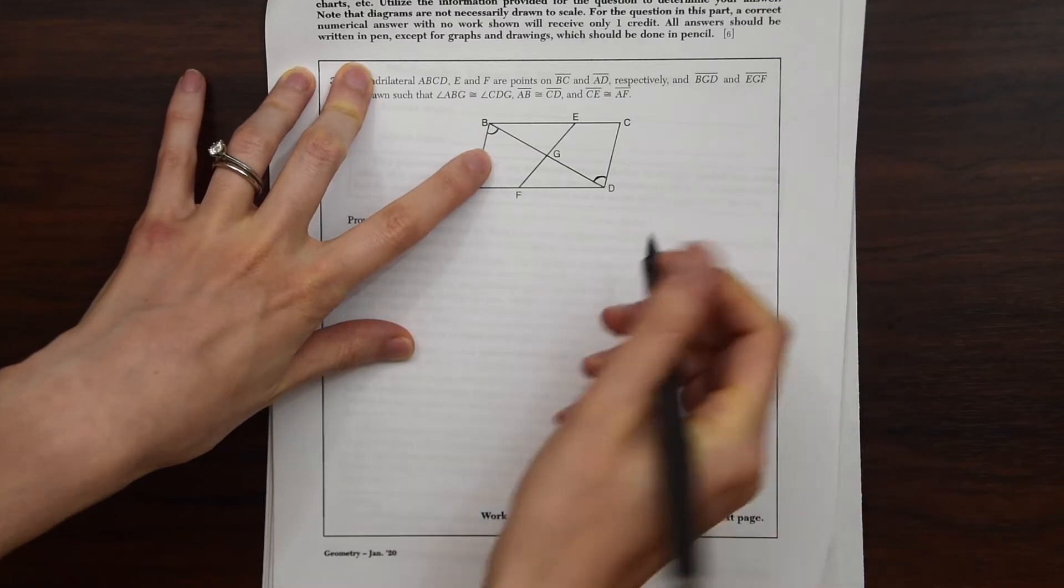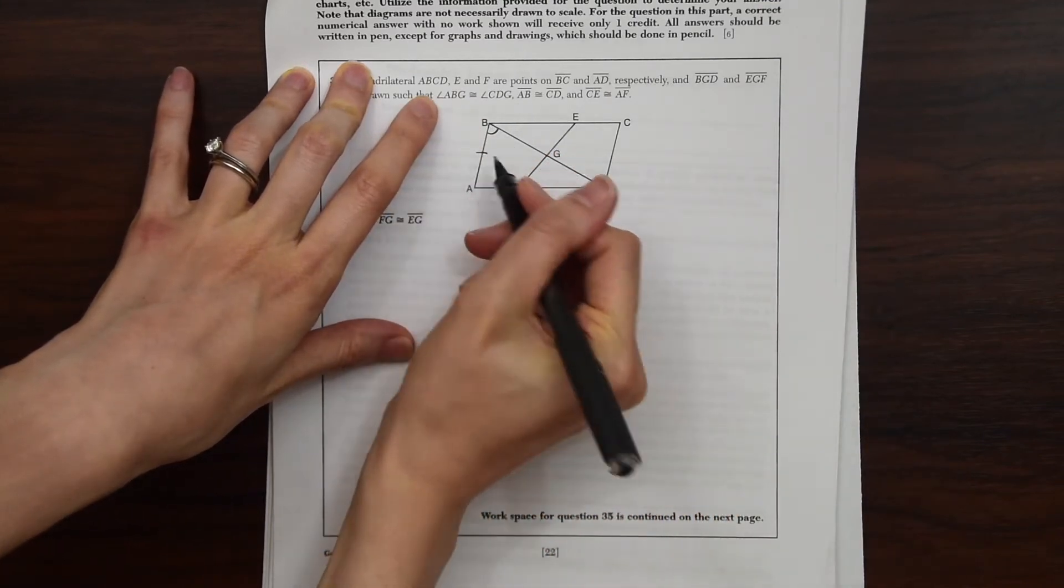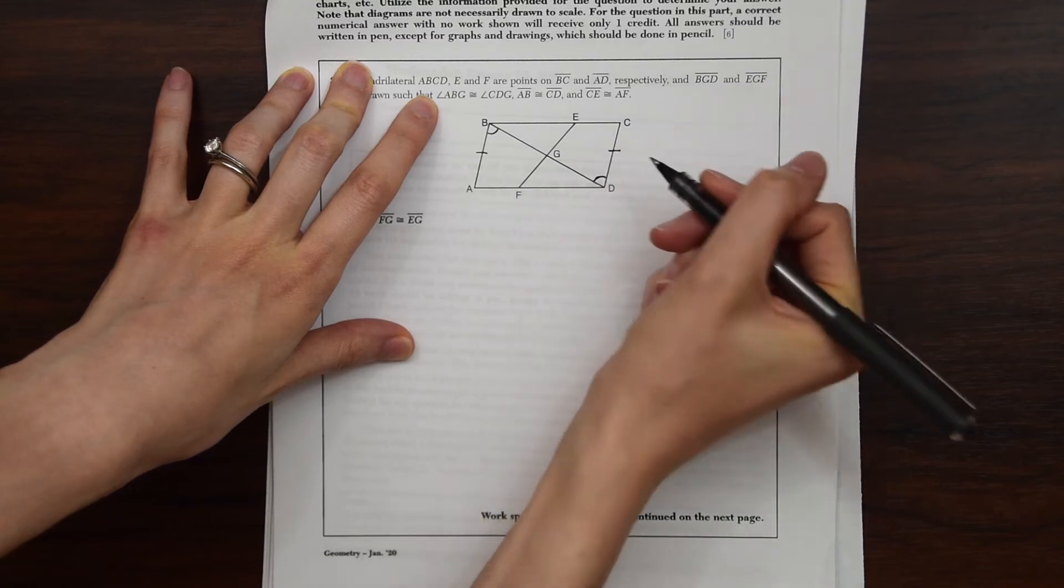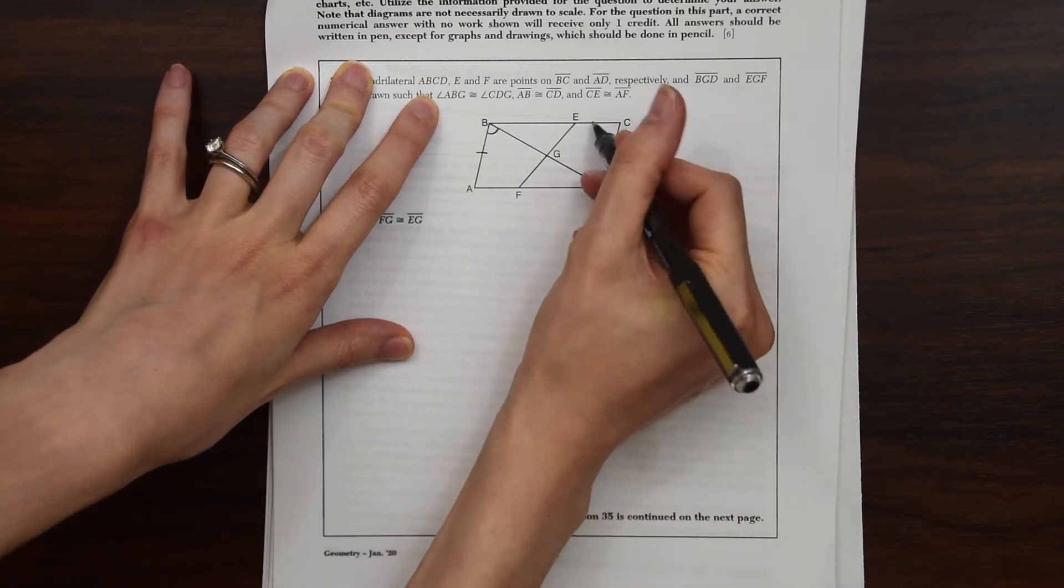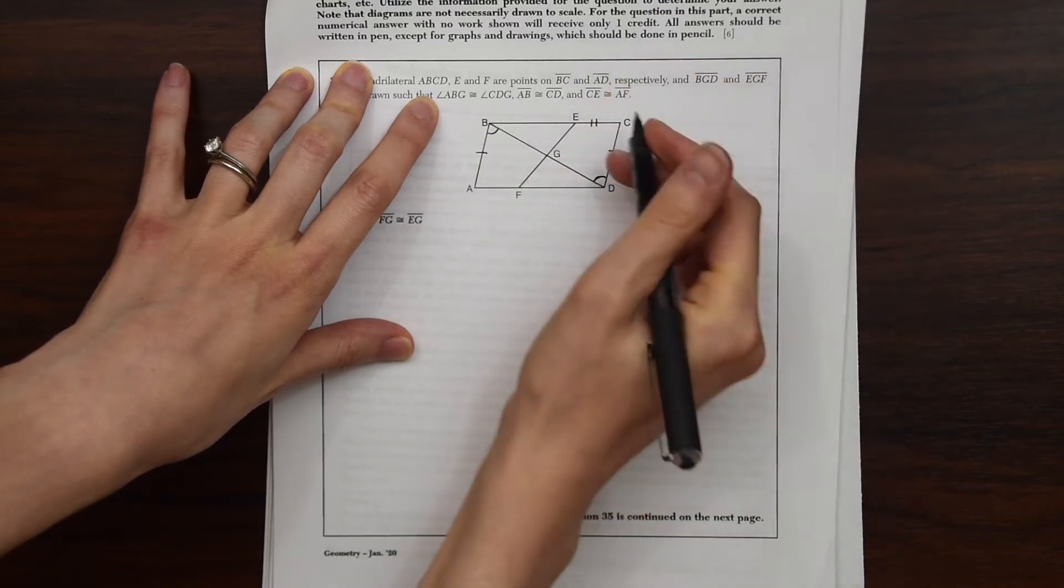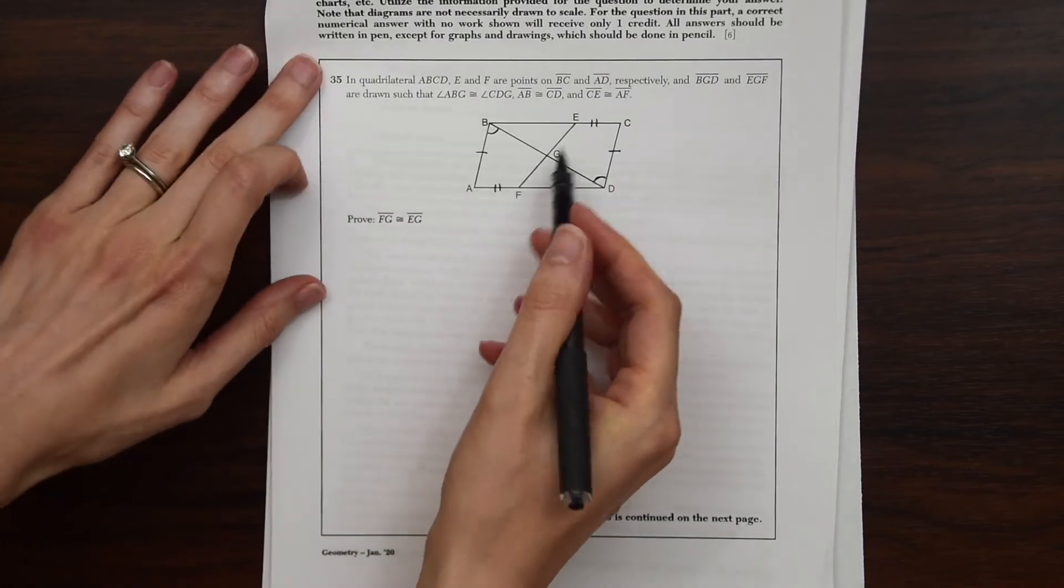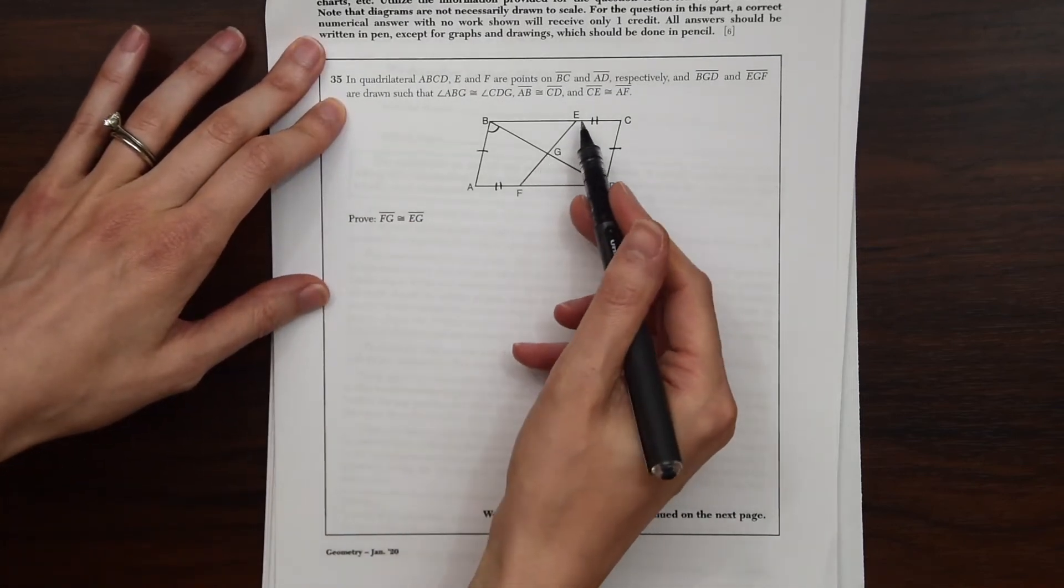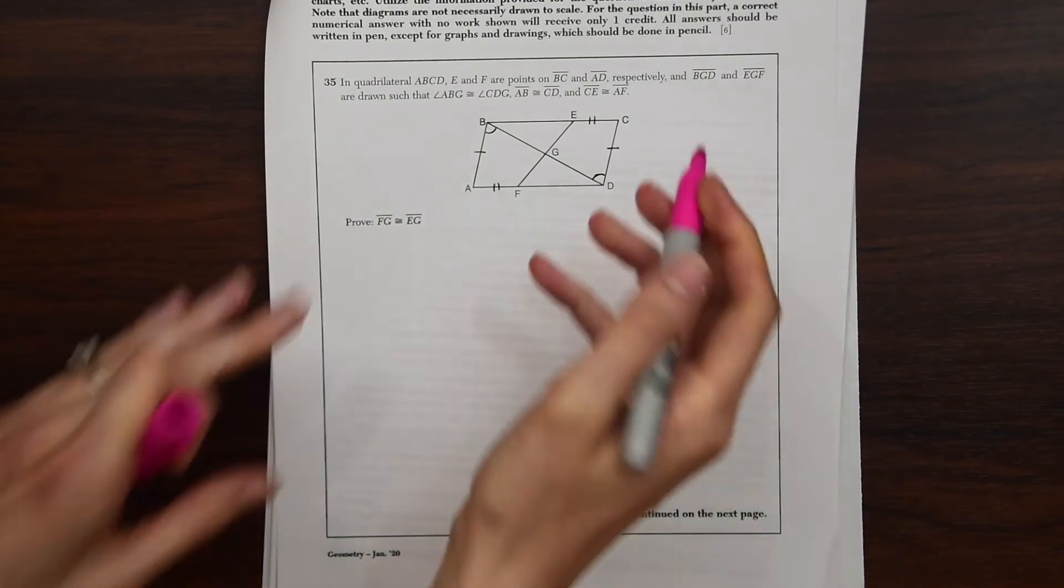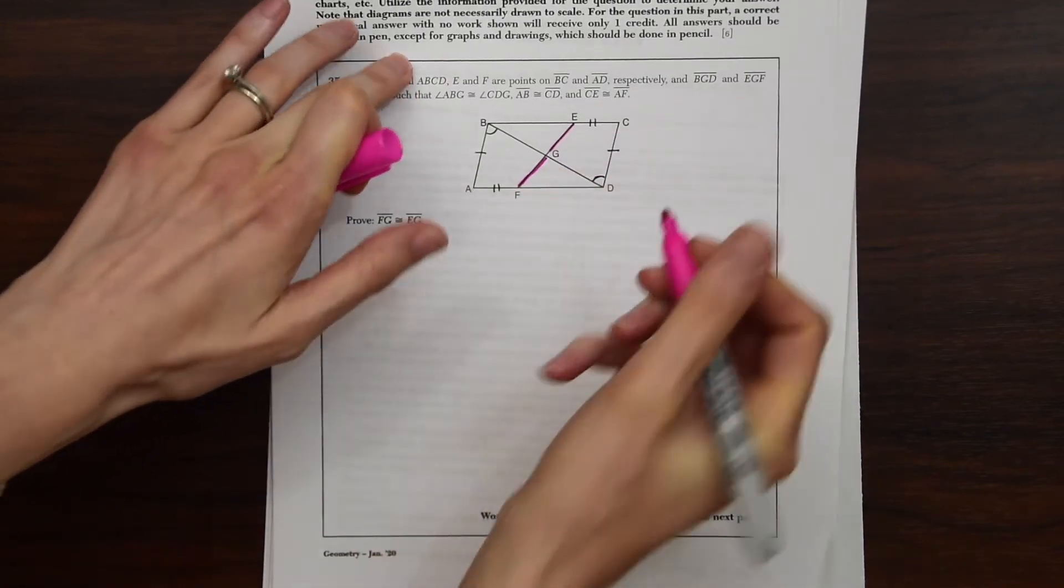And BGD and EGF are drawn such that angle ABG is congruent to angle CDG. So these two angles are congruent. And AB is congruent to CD. And CE is congruent to AF. Prove FG is congruent to EG. So I'm just going to highlight what we want to prove congruent. We want to prove FG is congruent to EG.